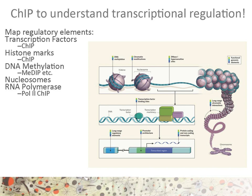For example, a trimethylation on the 27th lysine of the histone H3 protein — so-called H3K27Me3 — is a histone mark indicating transcription inhibition. When the chromatin is open and the DNA accessible, proteins can bind to the DNA, such as transcription factors. These proteins have an essential role in promoting or inhibiting the expression of genes. All of these can be studied using ChIP.